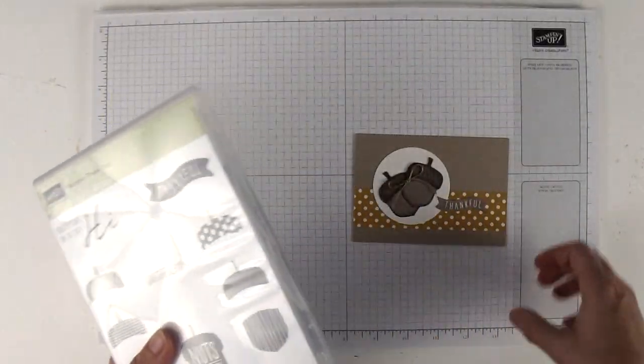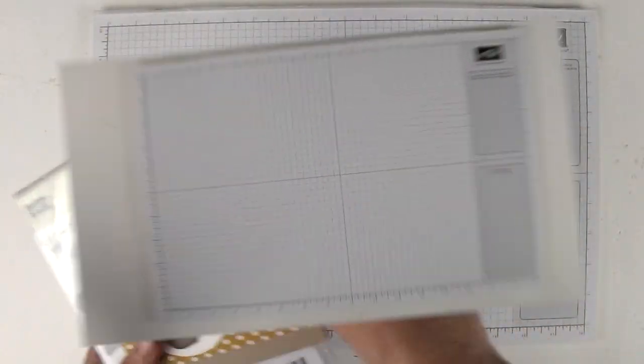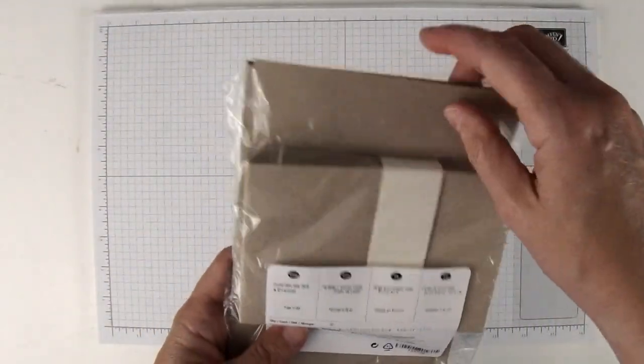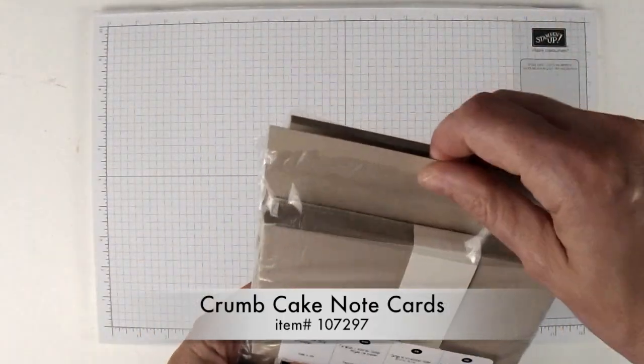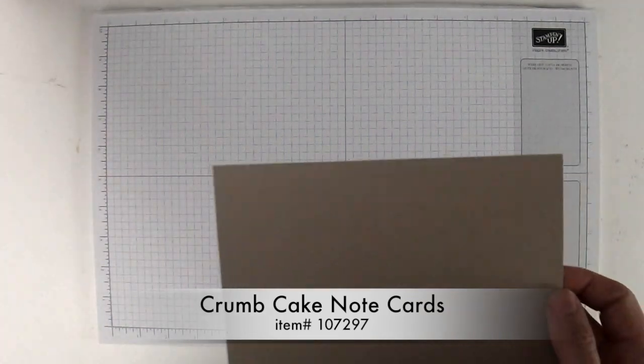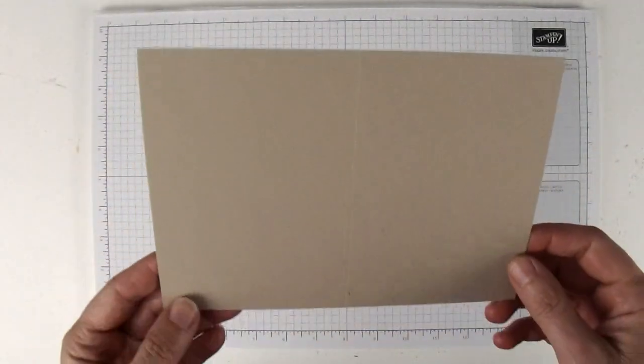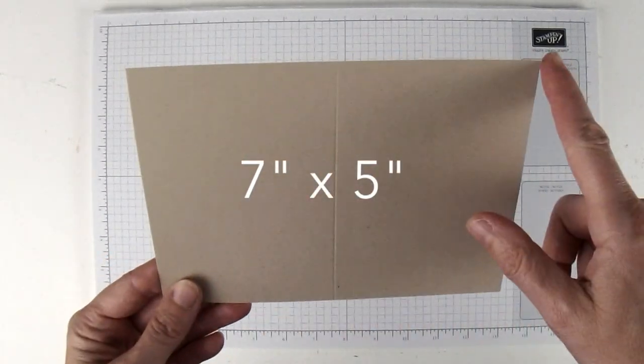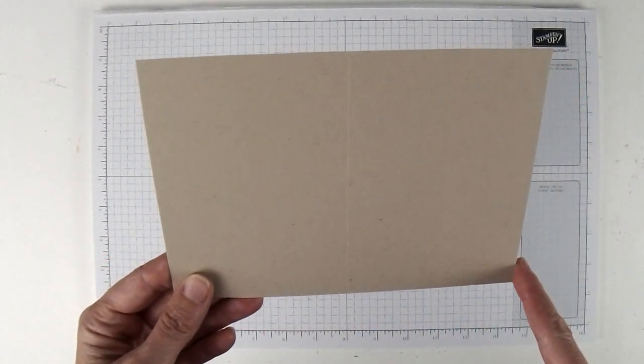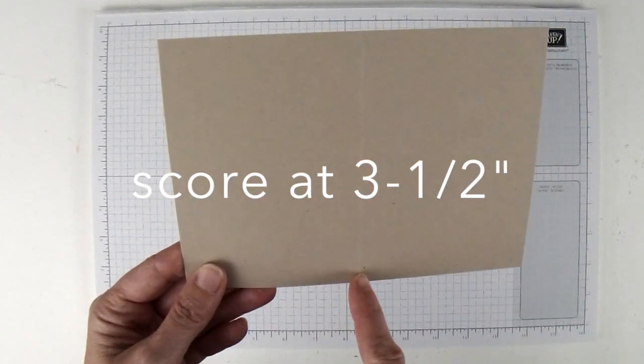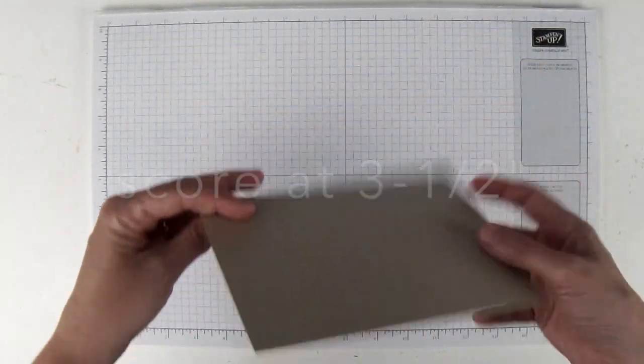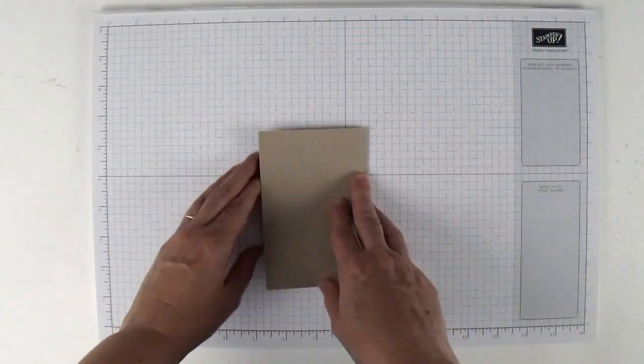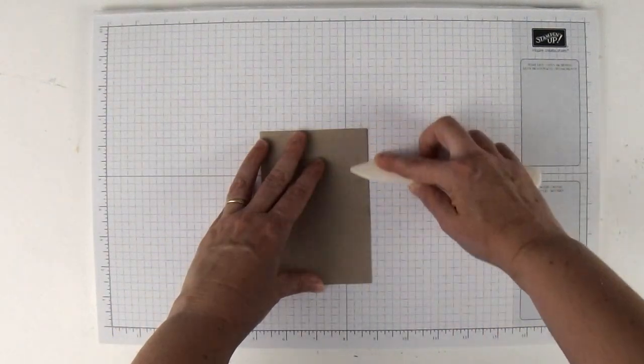To start off, you're going to need some crumb cake note cards and envelopes. If you don't have a crumb cake note card, you can cut one yourself by cutting a piece of cardstock to seven inches by five inches and then scoring in half at the three and a half inch mark. We're going to fold this note card in half.